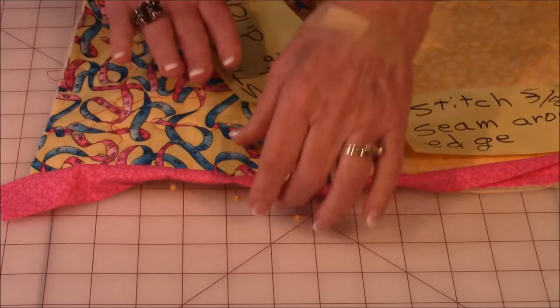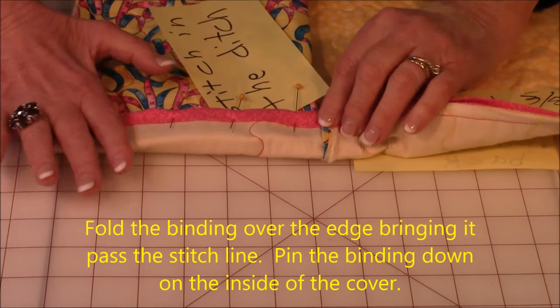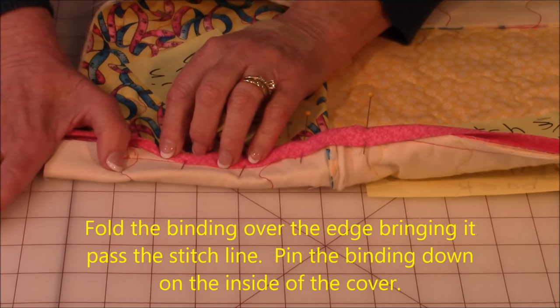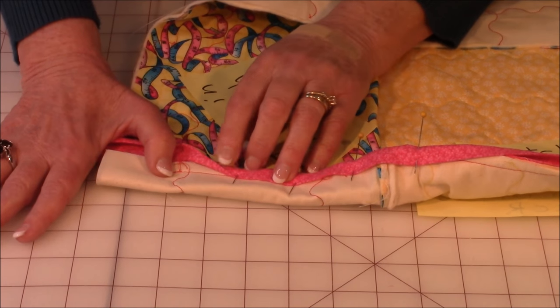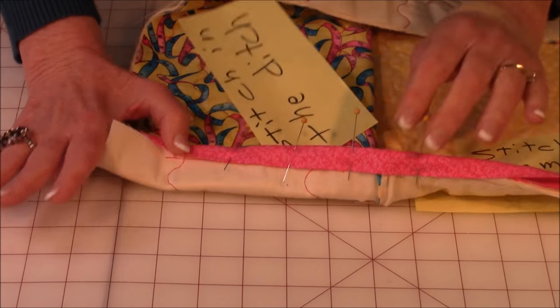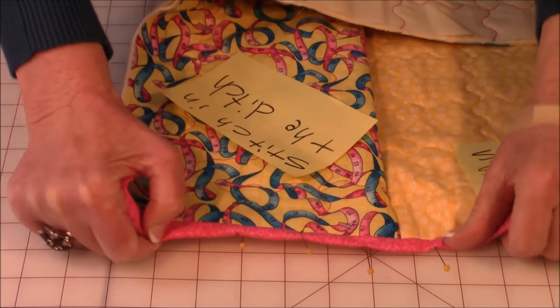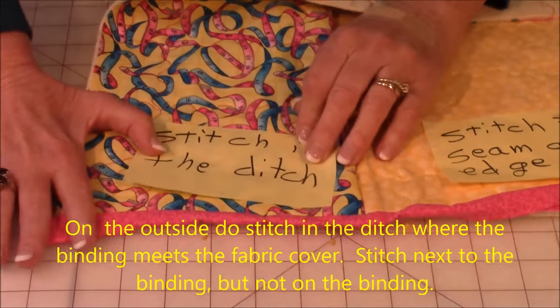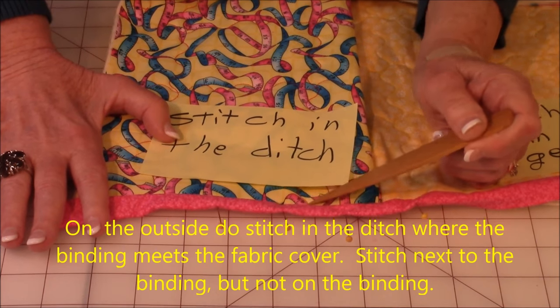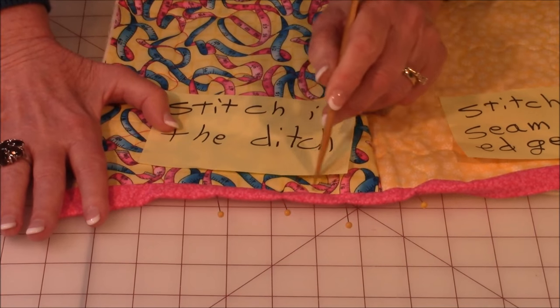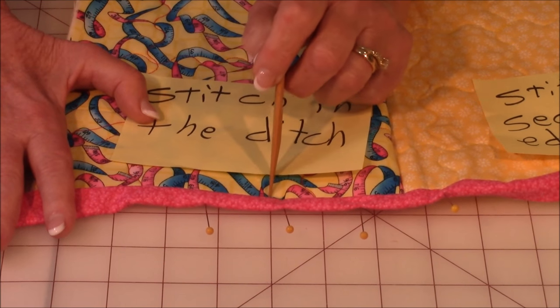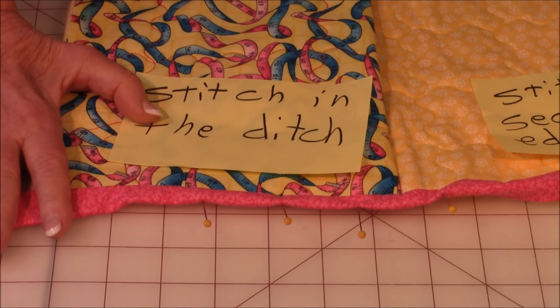Then flip it over to the inside. And you're going to take the folded edge of the binding and bring it past the stitch line. And pin it down all the way around the lower edge of the cover. Then flip it back to the outside. And you're going to do stitch in the ditch. And that's where two pieces of fabric come together. This is the ditch. You're going to stitch right in that ditch. Don't stitch on the binding. You're going to stitch in the ditch. Right here. Stitch all the way around. And then you're done.